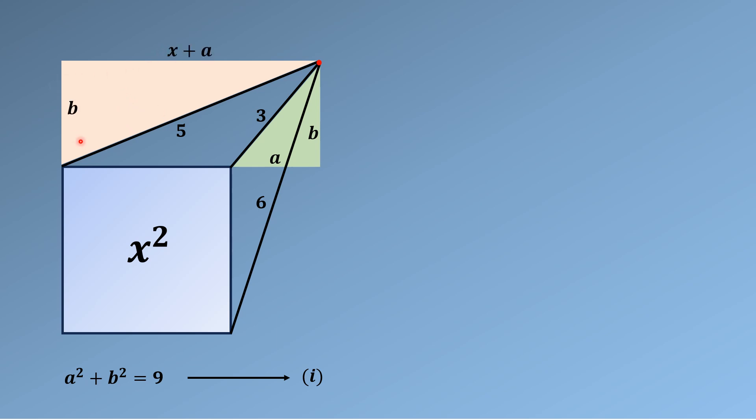Now using the Pythagorean theorem on this right triangle, we will get (X + a)² + b² = 25. Let's call this equation as equation number two.